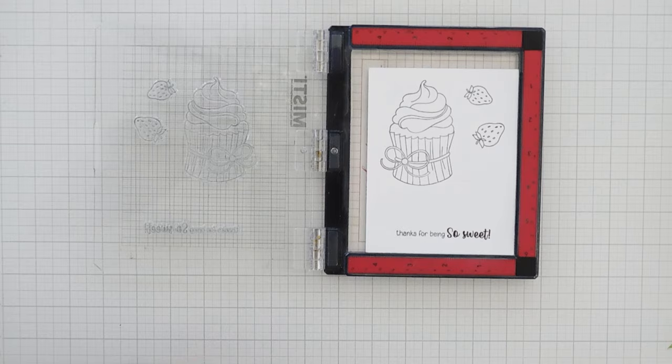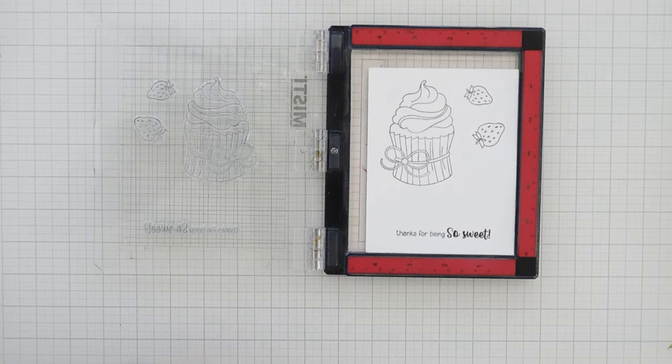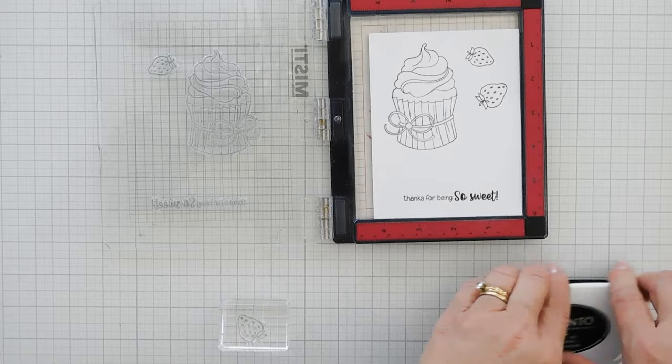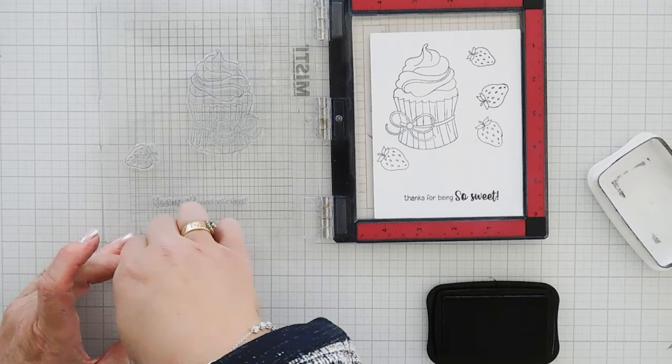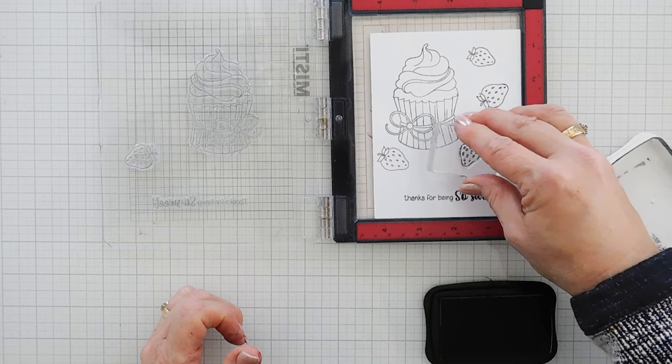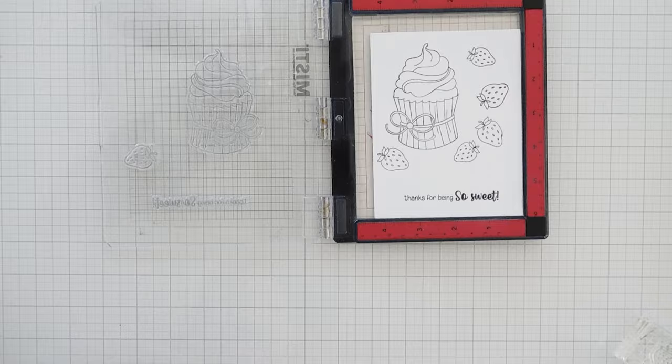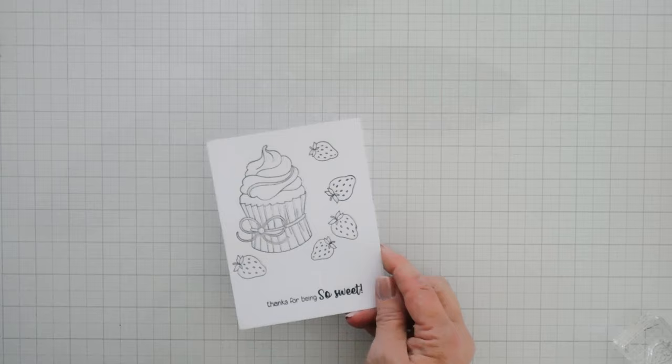I'm going to bring in an acrylic block, and I'm going to stamp my strawberries just a couple more times here. So those are our images. Now, I'm pretty sure that Simon will have the coordinating die set, but I don't have that one, so I'm going to do a little bit of fussy cutting.